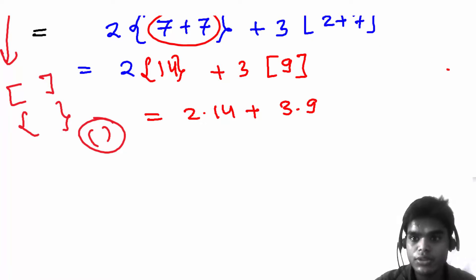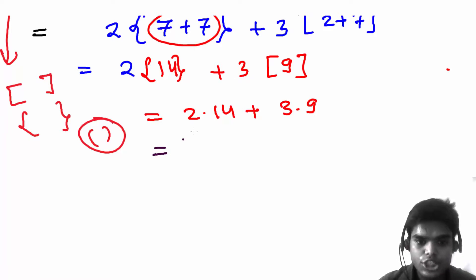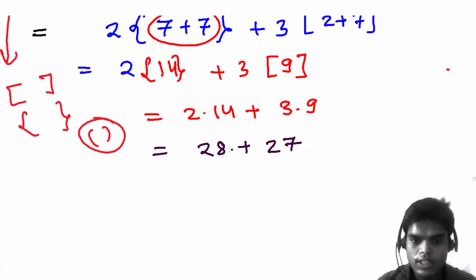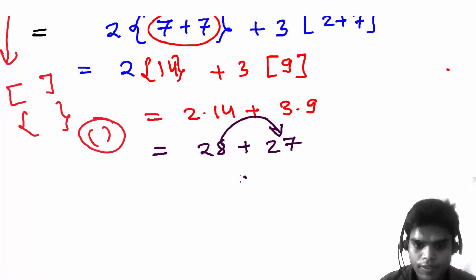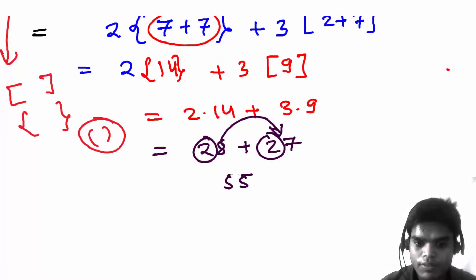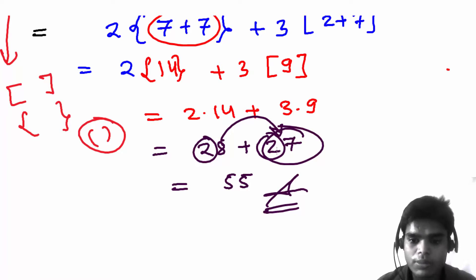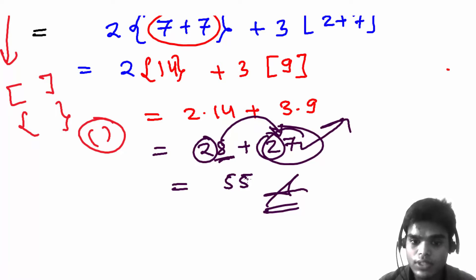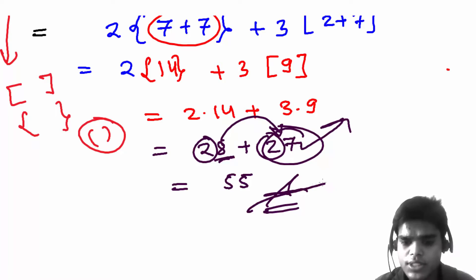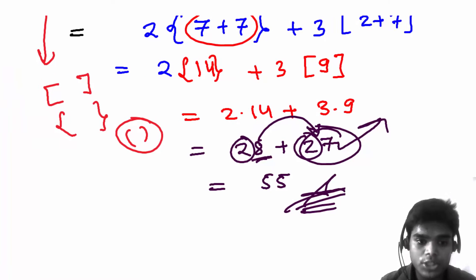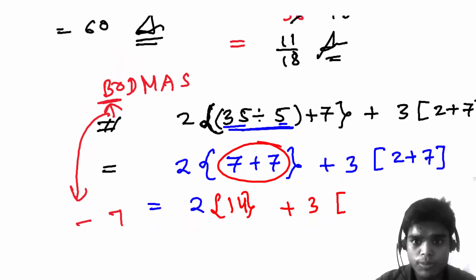If there is nothing between a number and a bracket, that means multiplication. So two times 14 is 28 and three times 9 is 27. Then 28 plus 27: 8 plus 7 is 15, carry the 1, so 2 plus 2 plus 1 is 55. That's our answer. This is how you apply the order of operations — the BODMAS rule — doing everything one step at a time.